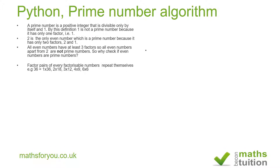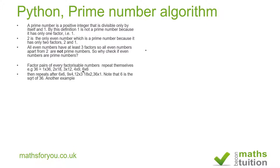Now, factor pairs: take 36 — you have 1×36, 2×18, 3×12, 4×9, 6×6. Six is the square root of 36. After that you get 9×4, 12×3, 18×2, 36×1 — you're repeating the same checks. The key point is there's no need to check beyond the square root of a number.